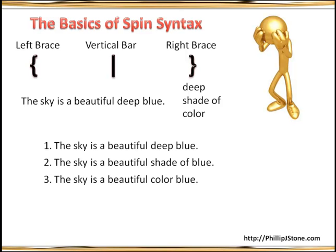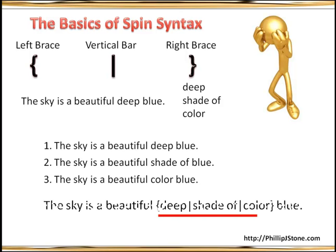The way we do that, if you have a program that can take spin syntax and create those variations, all you do is put it right into the line. You write 'the sky is a beautiful,' then you use the left brace, the word 'deep,' then a vertical bar, then 'shade of,' then a vertical bar, then 'color,' then the right brace. The program will then choose those different options when it submits. If you want to multiply your options, you can go to the word 'beautiful' and replace it with 'awesome' or 'magnificent' or other adjectives. You could even use 'heavens' as a variation for 'sky.' That's the basics of spin syntax.